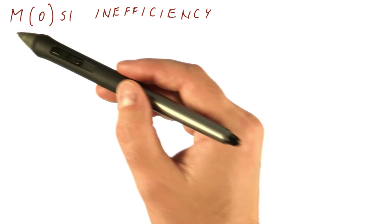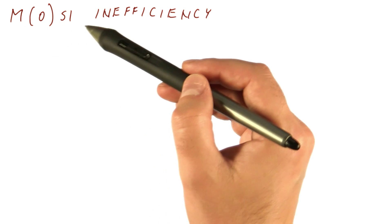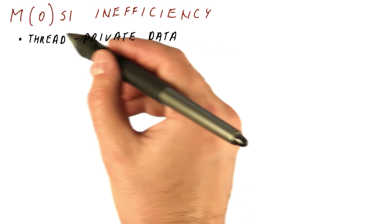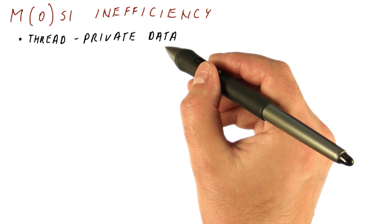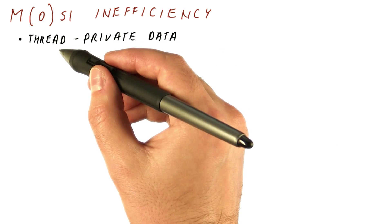There is another inefficiency that both MSI and MOSI have, and that inefficiency is related to thread-private data, or data that is only ever accessed by a single thread.